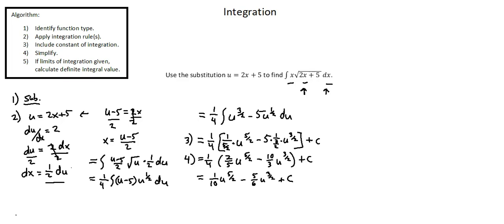Pay close attention — this does not complete all requirements and we have not completed integration using substitution example 1. Our equation is in terms of u, but we want an equation in terms of x. So as a final step, we will re-substitute. We originally replaced x terms with u terms; now we're going to replace the u terms with x terms. We end up with 1 over 10 times u to the power of 5 over 2.